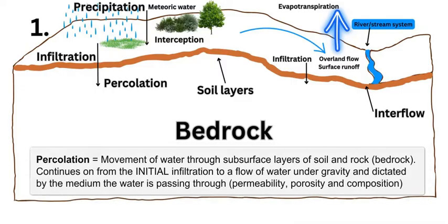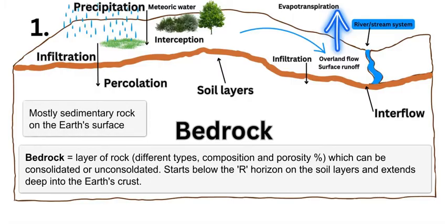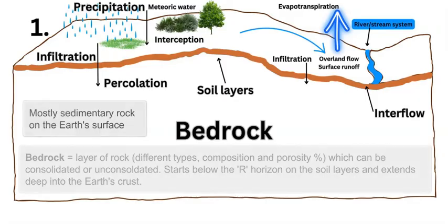Then we have percolation, which is the process of water moving down through the layers of soil and bedrock. Bedrock is a general term for the solid, consolidated rock underneath the soil, from which the soil originally comes through weathering and erosion. The bedrock could be any rock type — igneous, sedimentary, or metamorphic — but in most cases the majority of the Earth's surface above sea level has predominantly sedimentary rock, with a sprinkling of igneous and metamorphic on the continents.